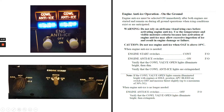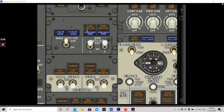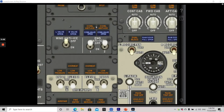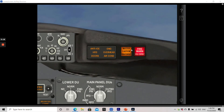Now let's talk about some abnormal operations for the engine anti-ice. If the cowl valve open light remains illuminated bright when engine anti-ice is turned on, the valve has remained in the closed position — icing conditions should be avoided. If the cowl valve open light remains illuminated bright when engine anti-ice is turned off, the valve has remained in the open position. If the total air temperature is above 10 degrees Celsius, limit the N1 thrust on the affected engine to 80% if possible. The cowl valve light illuminates if the pressure in the duct leading to the cowl valve is greater than the limits. The master caution and anti-ice system annunciator lights also illuminate.